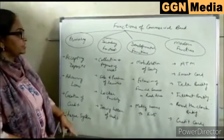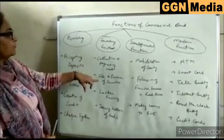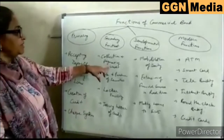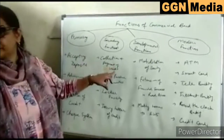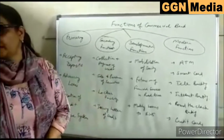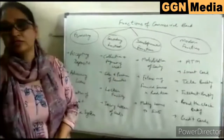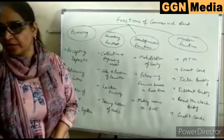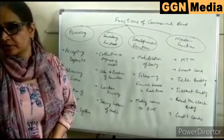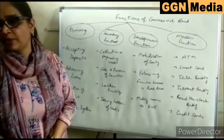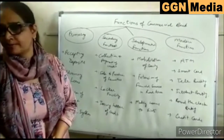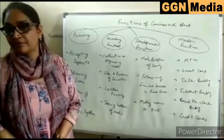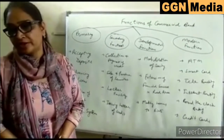Next are the secondary functions of a commercial bank. Collection and payment of credit: commercial banks collect and pay various negotiable instruments like cheques, bills of exchange, hundis, and promissory notes. They also make payments on behalf of customers such as payment of rents, income tax, fees, and insurance premiums.